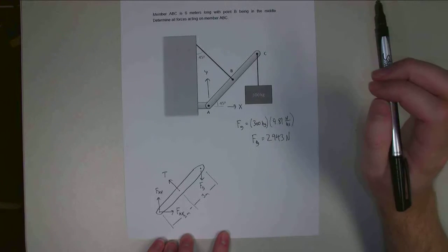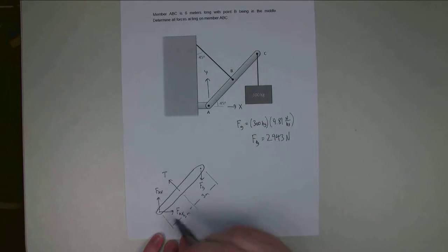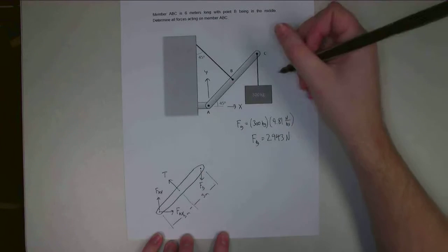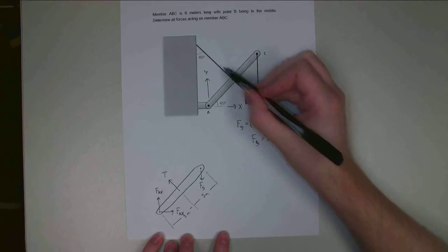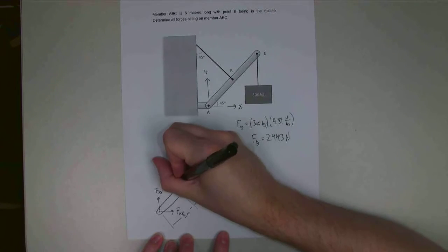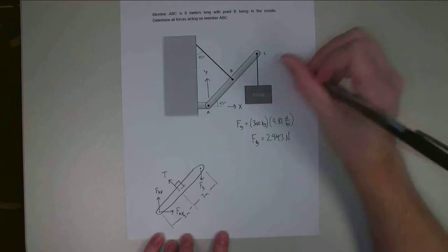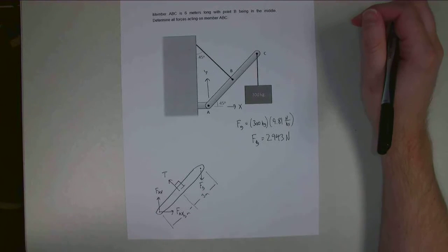Also, I can draw in some angles. So FAX, FAY, FG, they're all either horizontal or vertical, but this tension force is at a 45-degree angle, which is going to be perpendicular to the actual beam itself right there. I'm just going to draw in that right angle there.